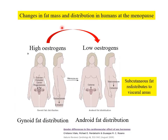Changes in fat mass and distribution also occur at the menopause. The high levels of oestrogens typical of pre-menopausal women drop as follicular function ceases at the menopause. Associated with that, there is a change in fat distribution, and subcutaneous fat tends to redistribute to more visceral areas.